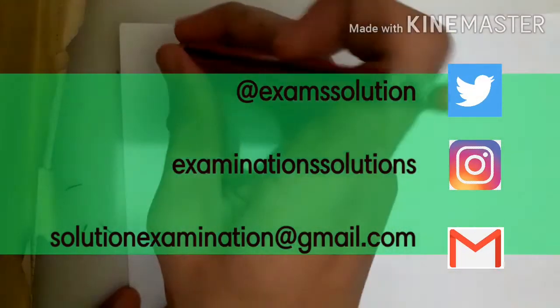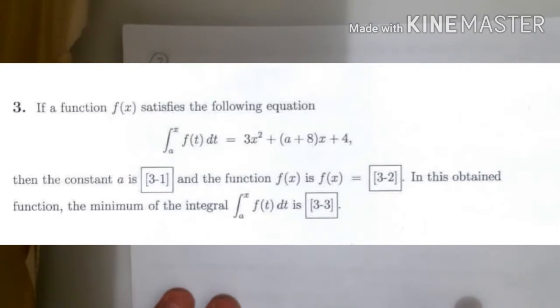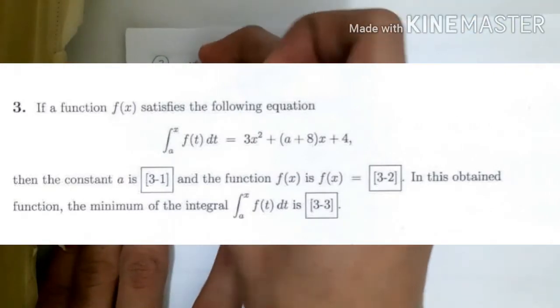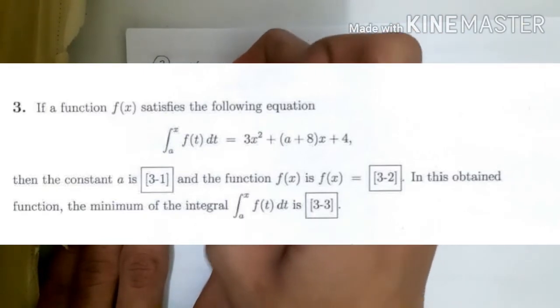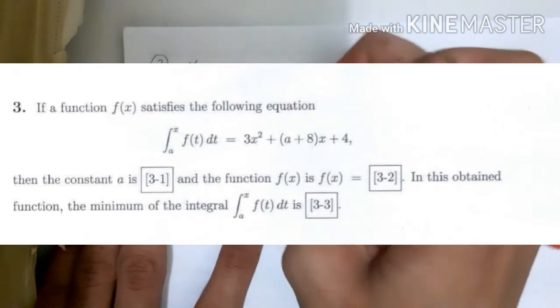Hello everyone, welcome to part 3 of Monbukagakusho Mathematics A 2015. We see that there is a function f(x) that satisfies the following equation: the integral from a to x of f(t) dt equals 3x² + (a+8)x + 4.